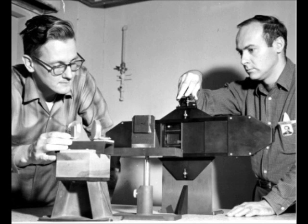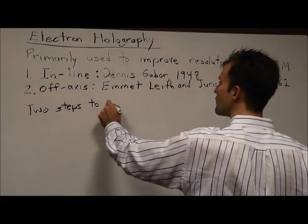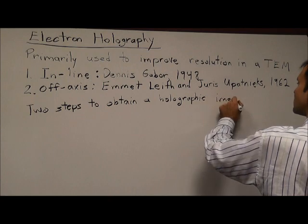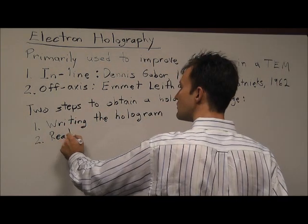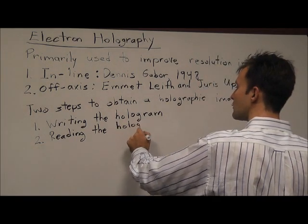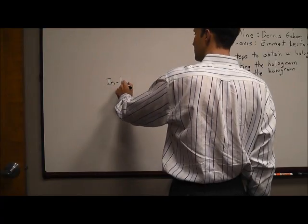In order to obtain a holographic image in a transmission electron microscope, two steps are required. The first is writing the hologram, and the second is reading the hologram. Writing the hologram is also called recording, and reading the hologram is also called reconstructing the image.